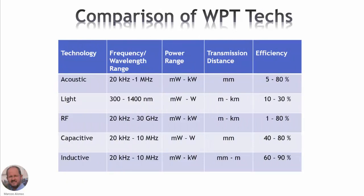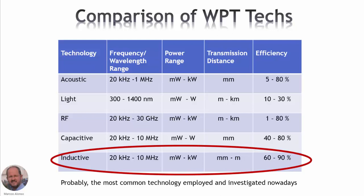Here we have a comparison of the different WPT technologies — acoustic, light, radiofrequency, capacitive, and inductive — comparing them in terms of frequency or wavelength range, power range, transmission distance, and efficiency. We can conclude that inductive wireless power transfer has the best characteristics overall: a high range of frequency operation, power range up to kilowatts, distance between millimeters and meters, and efficiency as high as 90%. So nowadays, inductive WPT is one of the technologies most investigated in WPT applications.